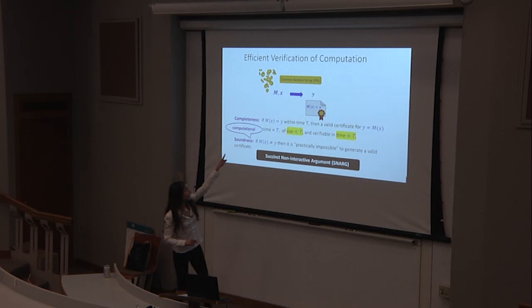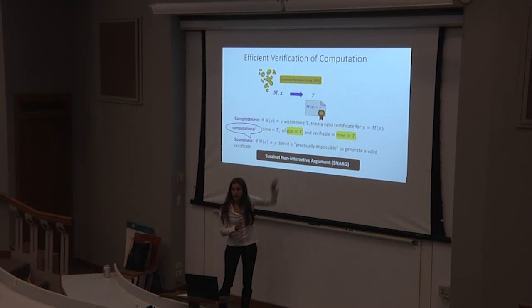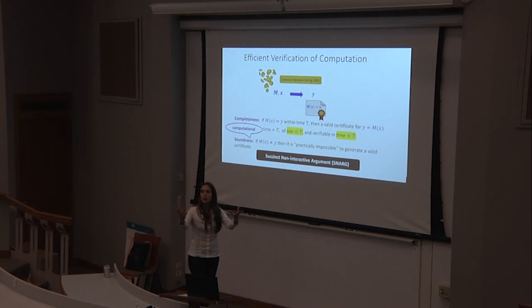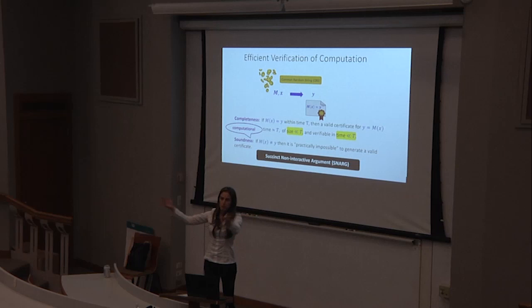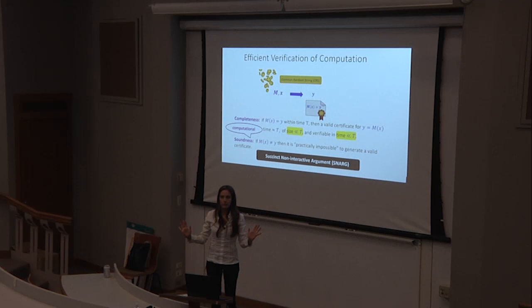The person doing the computation outputs not only Y but also the certificate. So if I'm delegating computation to some cloud or in a blockchain setting, I want the prover to append a succinct certificate so that everybody knows the computation was done correctly.